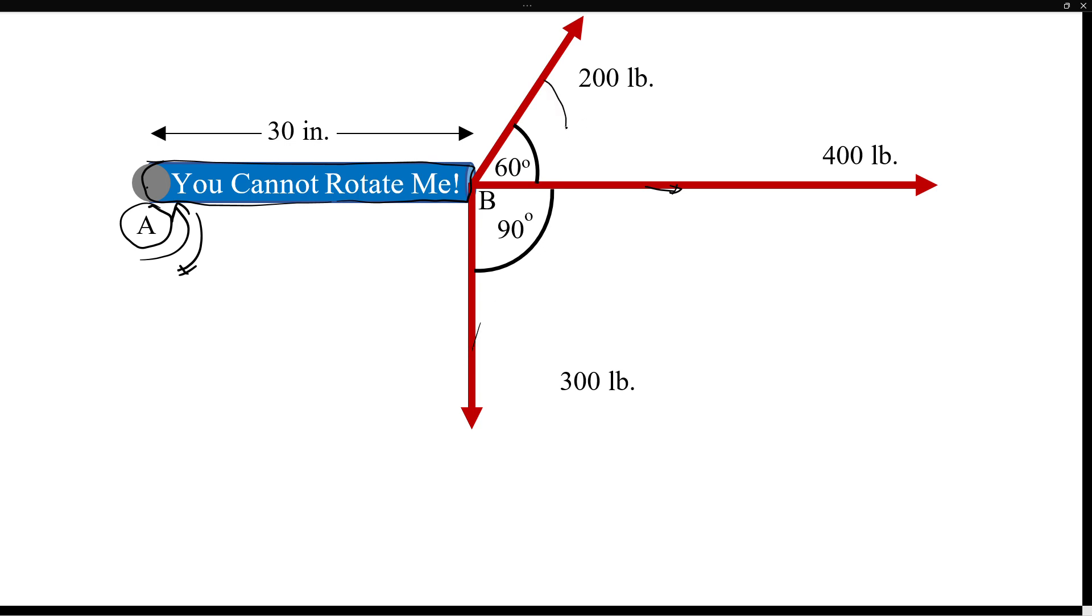This 200 only we have to resolve in a way so one of the component passes through the fulcrum or pivot point which is A. If we resolve this 200 in this direction that's going to be 200 cosine 60 and that component is going to pass through A so it will not cause any moment. The other component will be 90 degrees to that direction, so that will be 200 sine 60 degree.